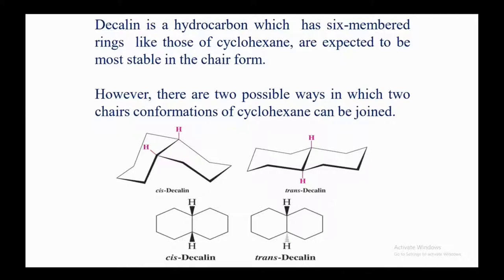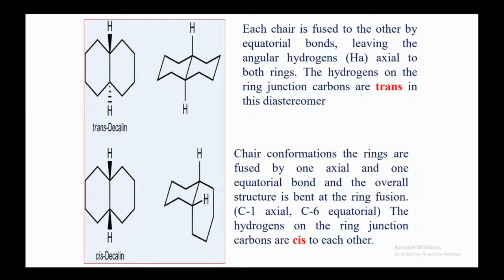In trans-decalin, each chair is fused to the other by equatorial bonds, with the angular hydrogens (Ha) axial to both rings — the hydrogens at ring junction carbons are trans in this diastereomer. In cis-decalin, the chair conformations are fused by one axial and one equatorial bond, giving an overall bent structure at the ring fusion; the hydrogens on the ring junction carbons are cis to each other.